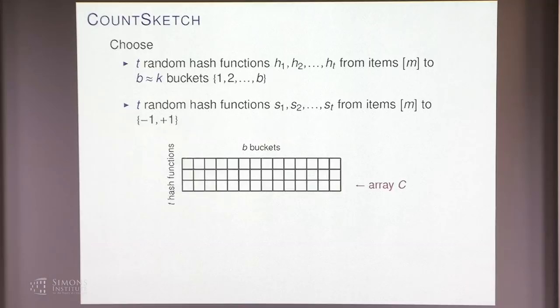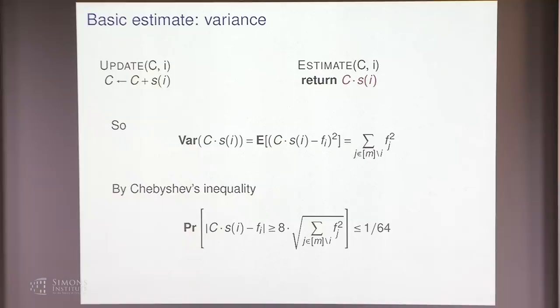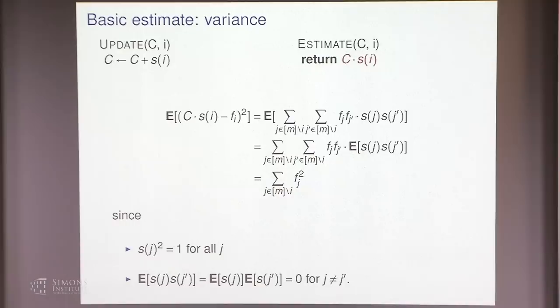A student raises whether four-wise independence is needed for the variance bound. The clarification is that si is fixed — it does not depend on the identity of elements in the noise term — so when you square the sum, si squared becomes one, and what remains are the other signs. Thus pairwise independence suffices for this bound. The confusion arises because four-wise independence is needed for f2 estimation, not for this particular calculation.